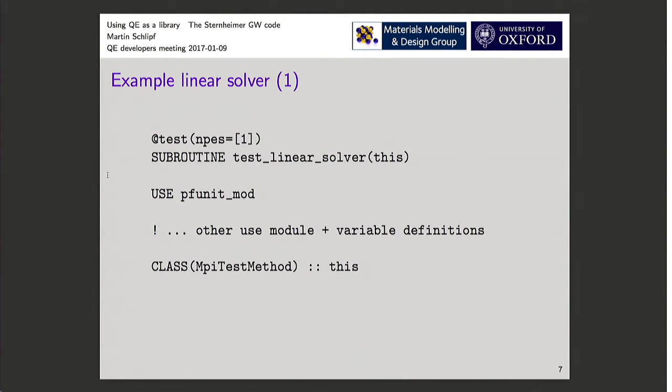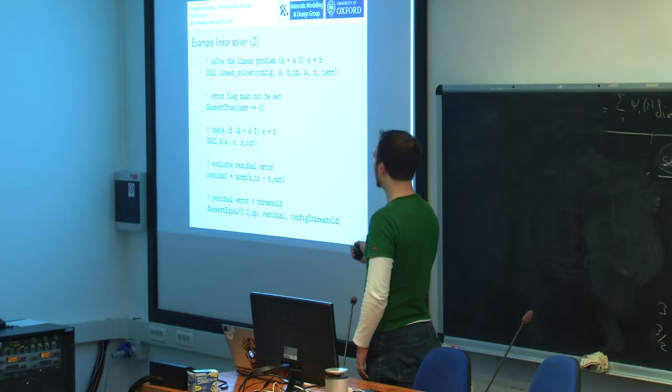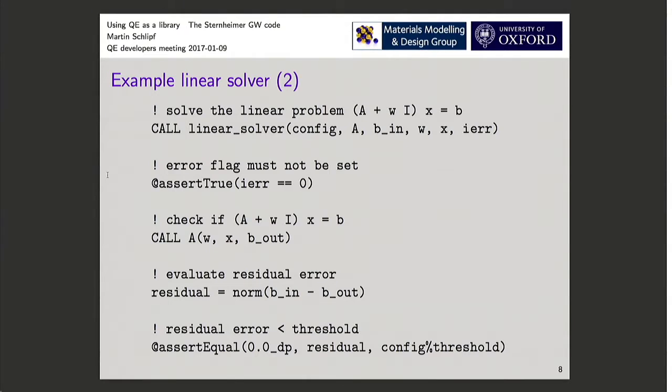You have here, all these @-statements are the extra statements for this test code. And then there's a class statement here which passes the testing information and this use statement to use the testing routines. And then the code is also very simple. This is the subroutine I want to test. So first I calculate the solution to the linear problem. I get out a solution and an error flag. First, of course, the error flag should be not set.